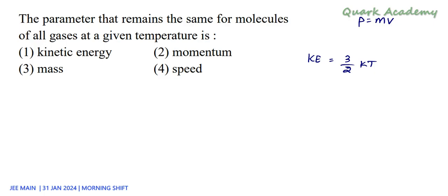So momentum cannot be the same. As I said, mass is also not the same because the values differ. Speed is also not the same because speed depends on both temperature as well as mass. The only parameter which is constant is kinetic energy.